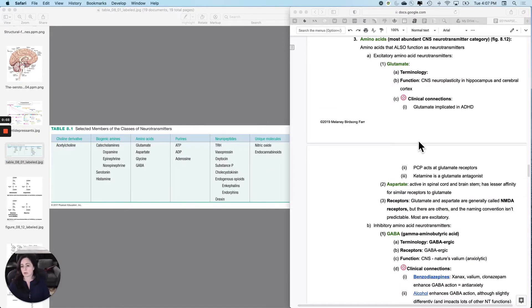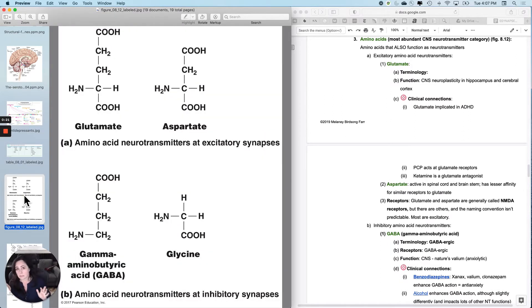On to a new category of neurotransmitters. The amino acids are different than the biogenic amines because the biogenic amines are slightly modified amino acids that couldn't, for instance, be part of a protein any longer, but the straight amino acids could have just as easily been part of a peptide but are being used as neurotransmitters.